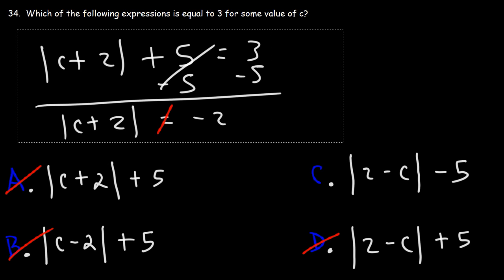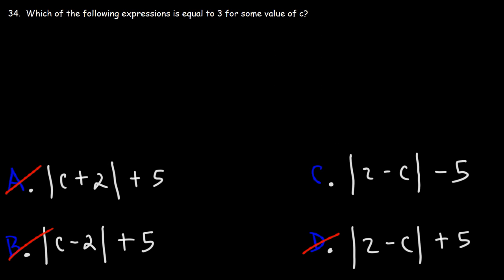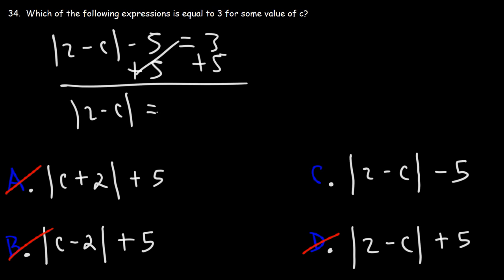Now let's see why C would make sense, because this is the only one that we can actually solve. If we set the absolute value of 2 minus c minus 5 equal to 3, if we add 5 to both sides, notice that the absolute value expression is equal to a positive number. 3 plus 5 is 8.